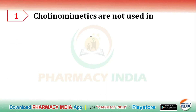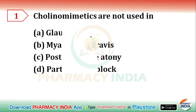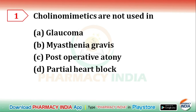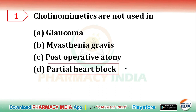The first question is: cholinomimetics are NOT used in which condition? Option A is glaucoma, Option B is myasthenia gravis, Option C is post-operative atony, Option D is partial heart block. The correct answer is partial heart block.